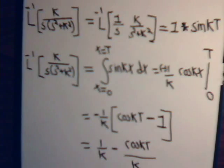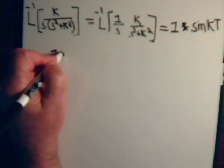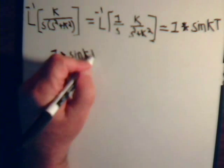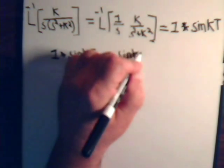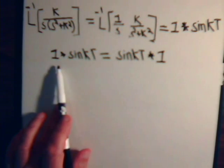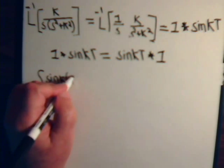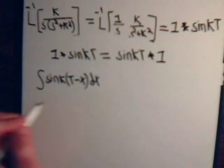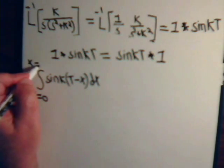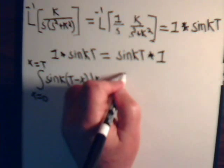Now when we were setting the problem up, remember we also had the convolution written as the integral of sin(k(t − x)) dx, with x from 0 to t. If we evaluate this integral, it should give us the same answer. Let's go ahead and do that quickly to verify.